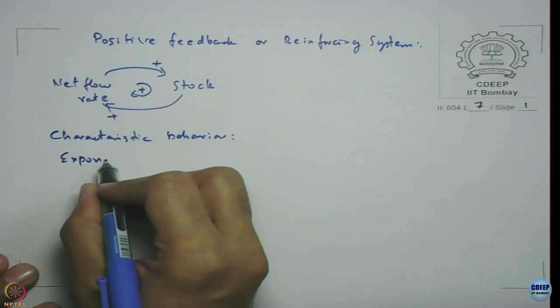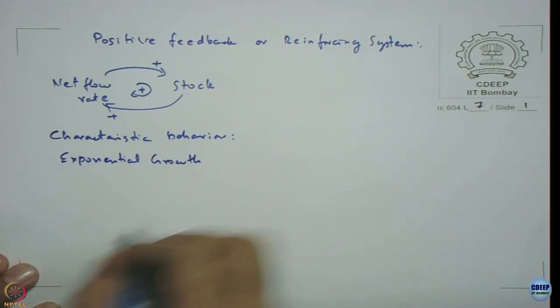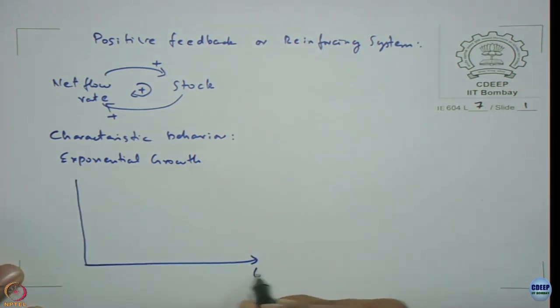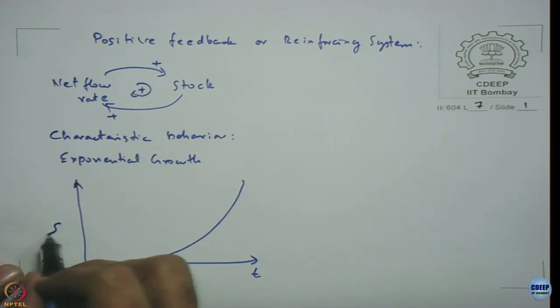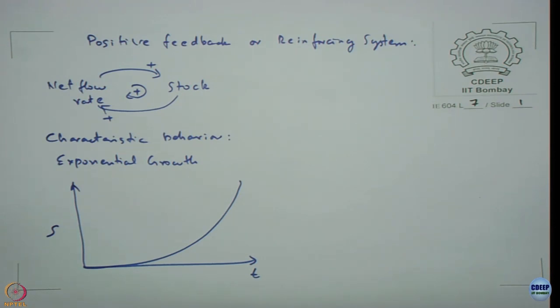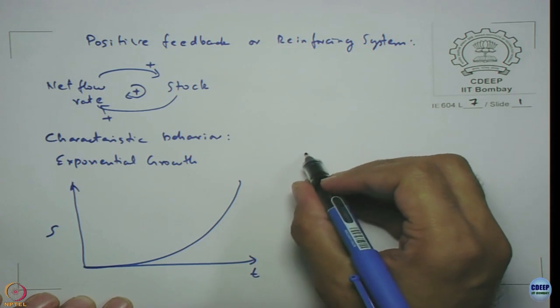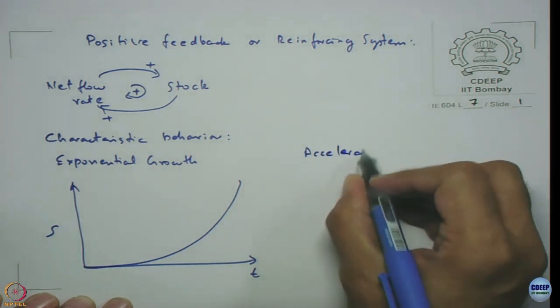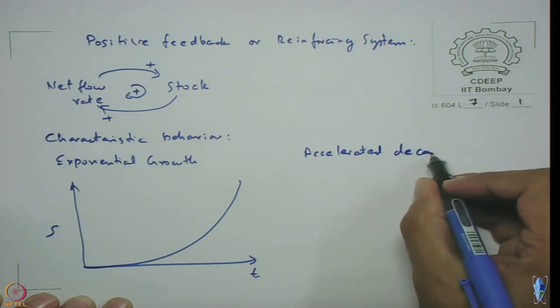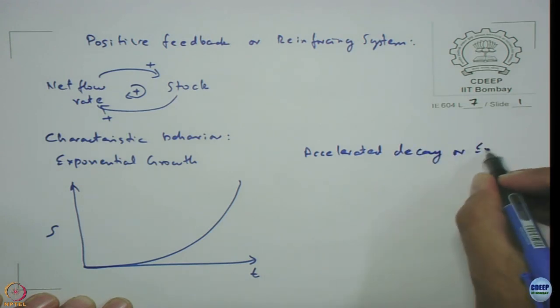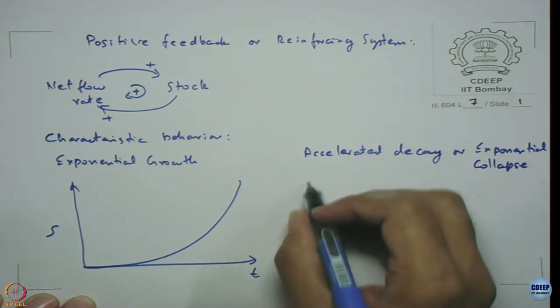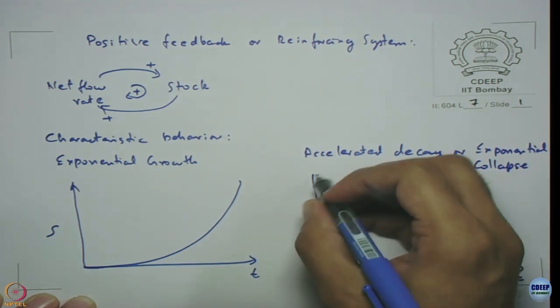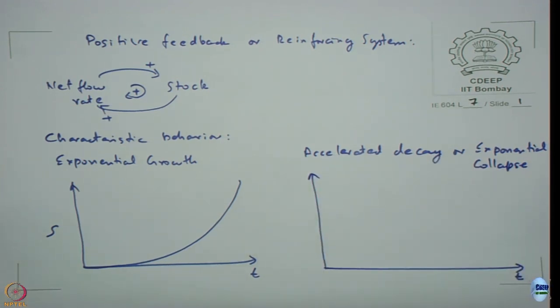It could be exponential growth whatever the variable of interest, let us assume it is a stock. This is your exponential growth, the other part is accelerated decay or exponential collapse.